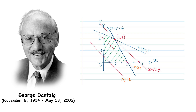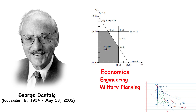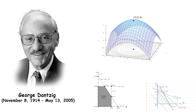George Dantzig was an American mathematician and operations researcher known as the father of linear programming. He developed the Simplex algorithm, a pivotal method for solving linear programming problems, which has applications in economics, engineering, and military planning. His work laid the foundation for the field of optimization.